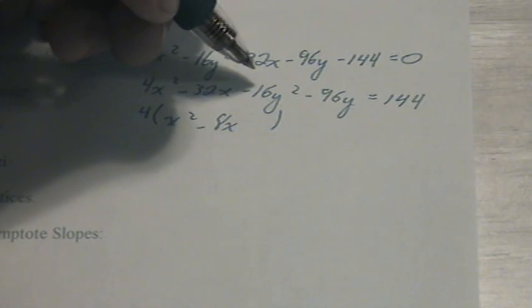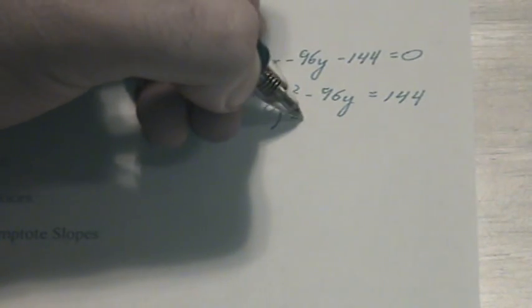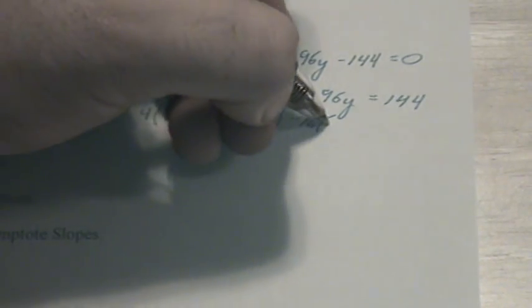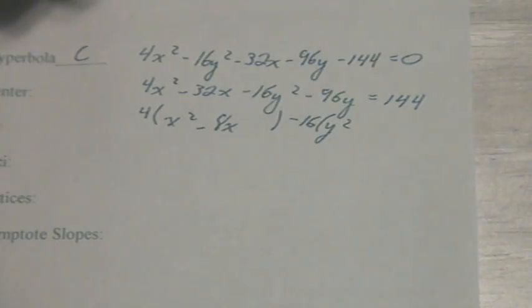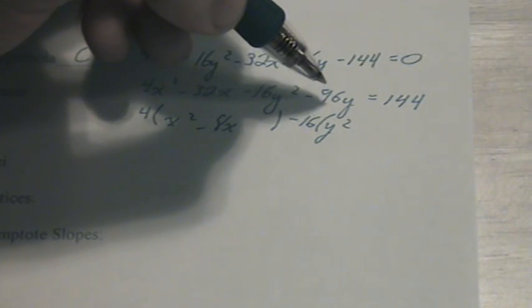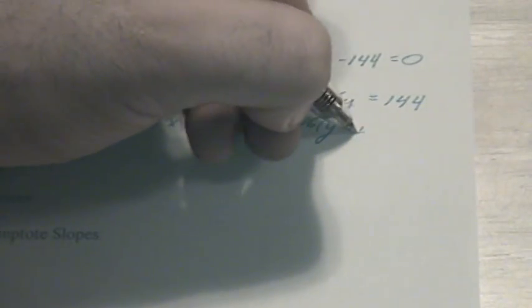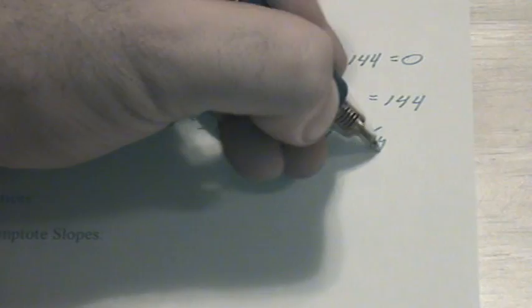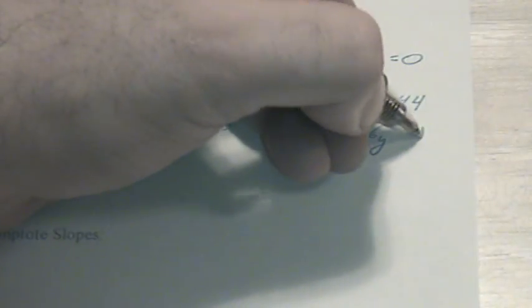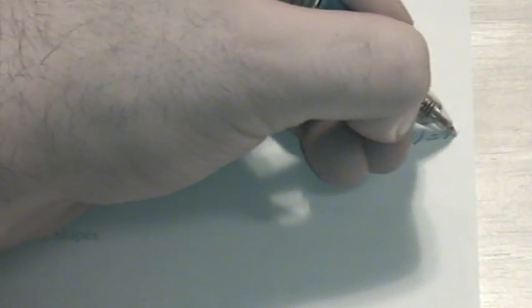Here we're going to factor out a negative 16. Minus 16 times y squared, we have to pull a negative 16 out of negative 96. Negative 96 divided by negative 16 is a positive 6y. And that equals 144.